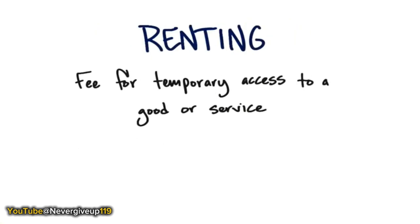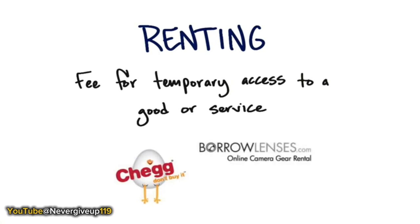There are other revenue models like renting. We rent houses, but a great example is Chegg in the book business — temporarily renting books. Or Borrow Lenses: instead of buying expensive camera gear like Hasselblads that you'd use intermittently, you rent them for a temporary period. Car rentals are the classic transportation example: instead of buying a car in every city, when you get off a plane you have temporary access to an automobile, drive it for hours or days, then return it.